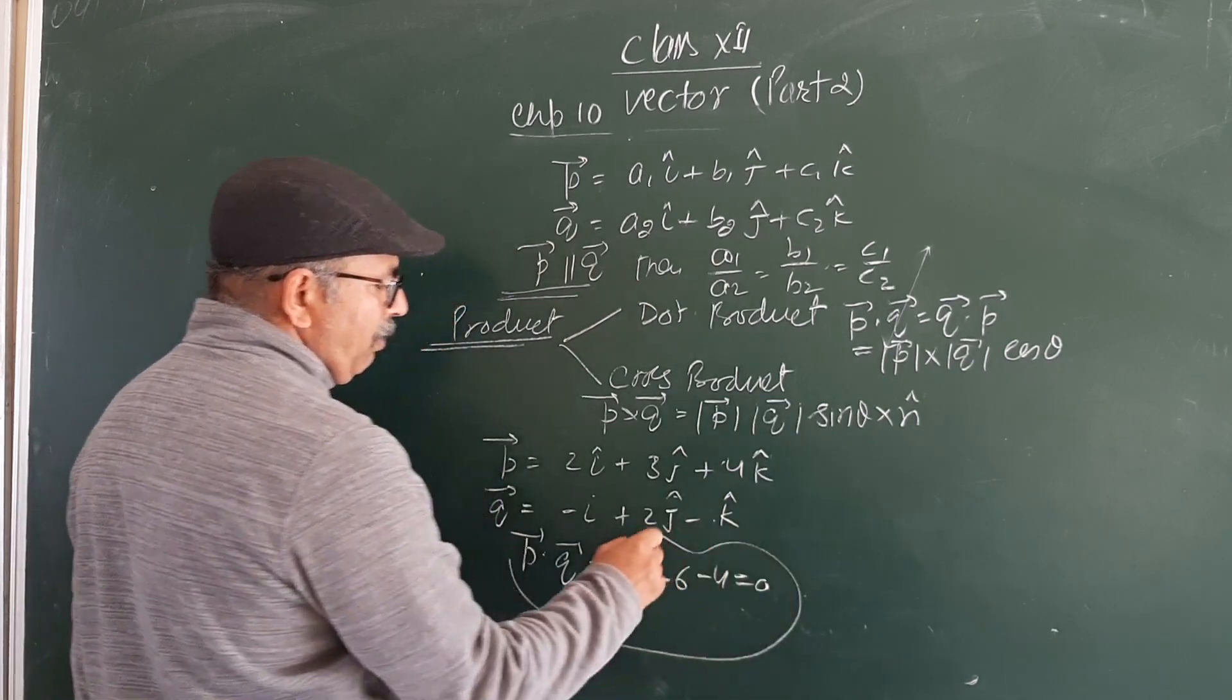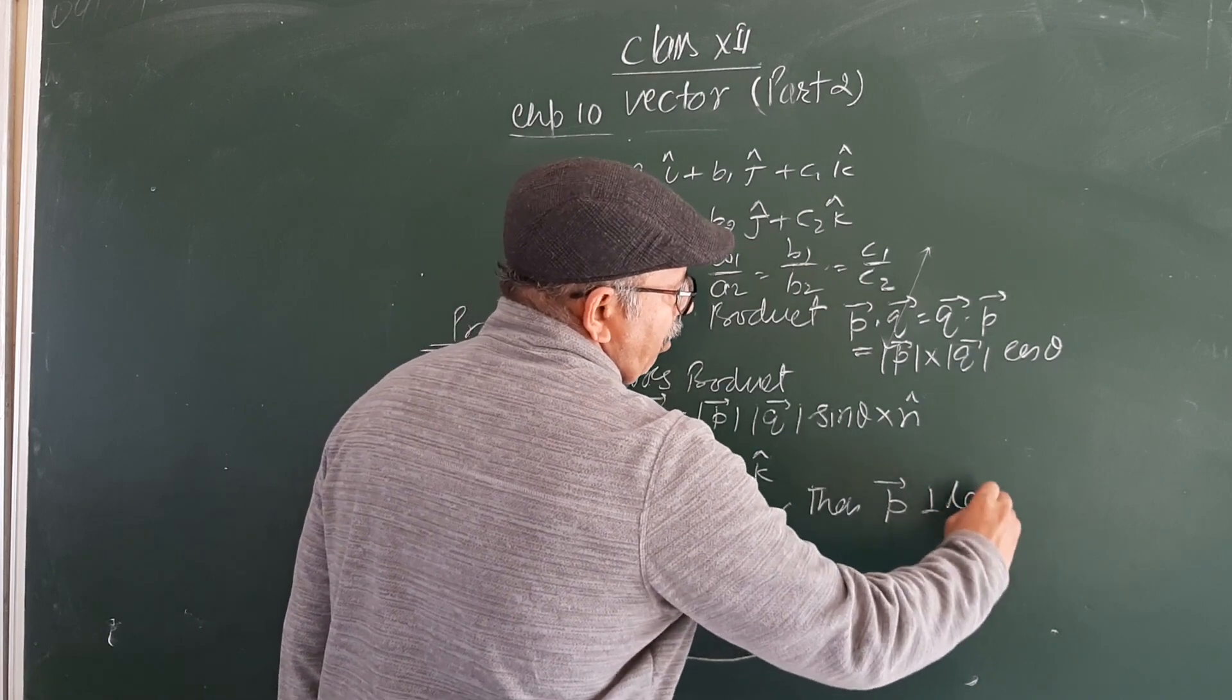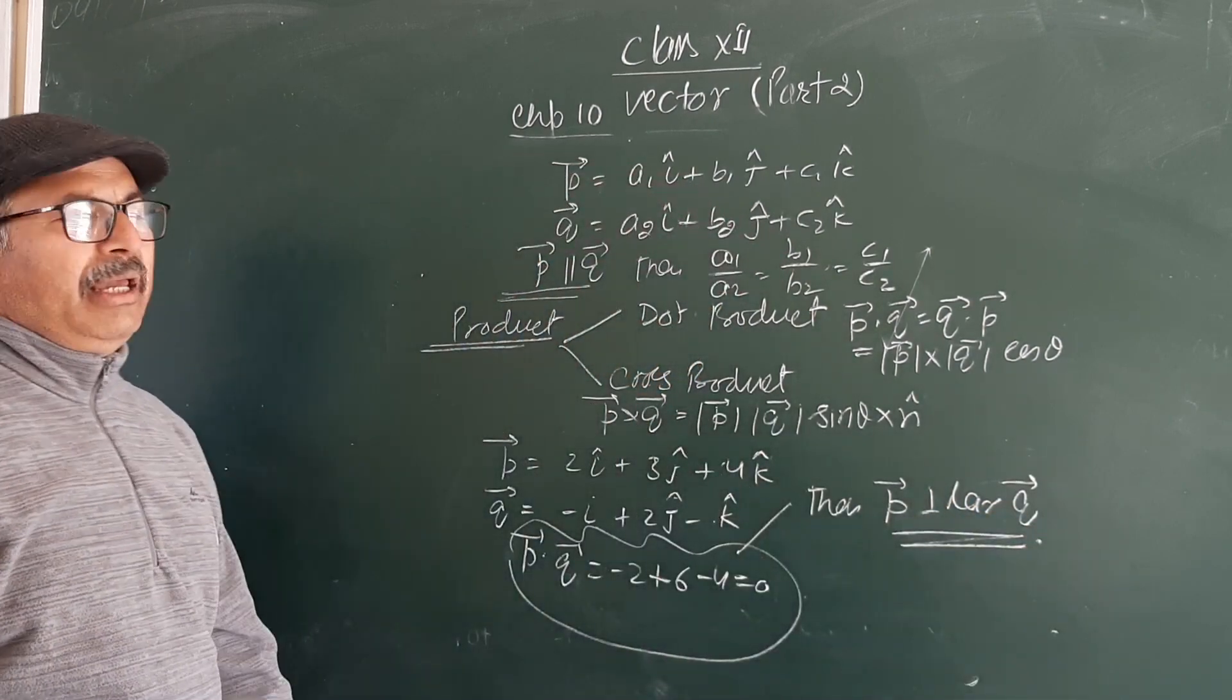P dot Q equals 0, then P is perpendicular to Q. Okay, thank you.